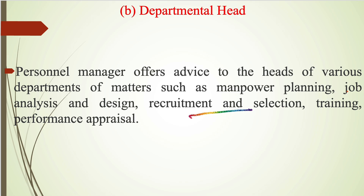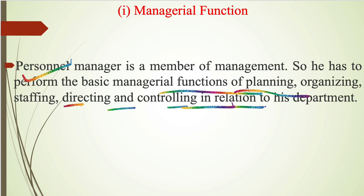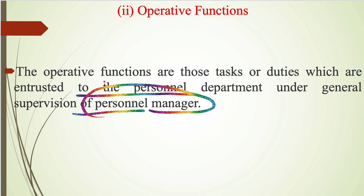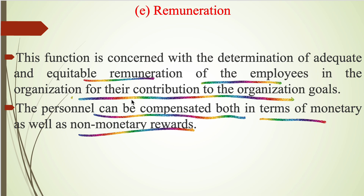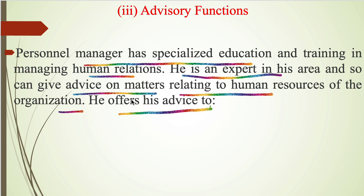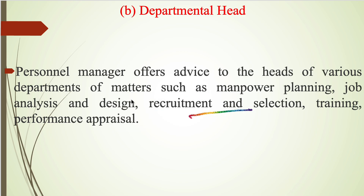To summarize, there are various types of functions of the personal management department. First is managerial function, second is operative functions, and third is advisory functions. Managerial functions include planning, organizing, staffing, directing, and controlling. Operative functions include employment, training and development, working conditions, industrial relations, remuneration, motivation, and personal records. In advisory functions, the personal manager provides advice to departmental heads as well as top management in policy making and recruitment of employees. This is all about the functions of personal management.